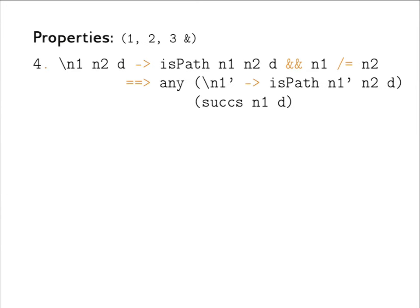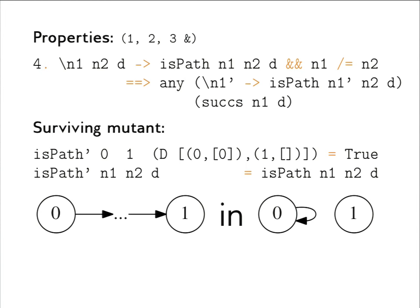Now with four properties, let's run FitSpec again. It reports incomplete — there is a surviving mutant: there is a path from 0 to 1 in the digraph with a loop at 0 and node 1. This follows properties 1, 2, 3 and particularly property 4, because the successor of 0 is 0, and `isPath'` says 0 has a path to 1, so it indeed follows the properties.